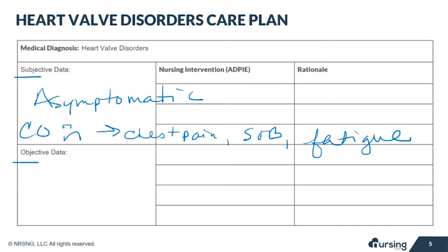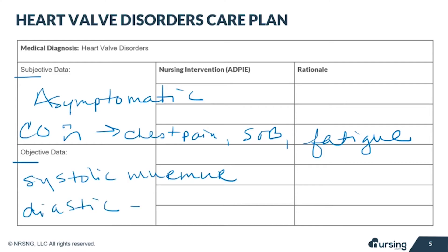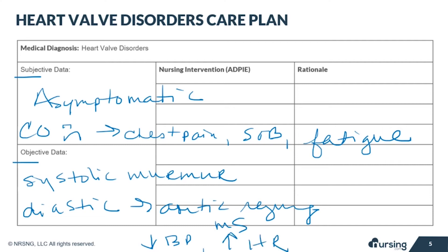Objective data includes a systolic murmur, which is indicative of aortic stenosis or mitral regurgitation, and a diastolic murmur is indicative of aortic regurgitation or mitral stenosis. If cardiac output is compromised, we may see decreased blood pressure, increased heart rate, weak pulses, slow capillary refill, and cool, diaphoretic, pale, or even dusky skin.